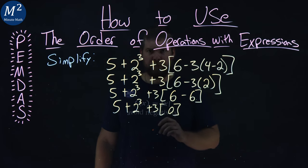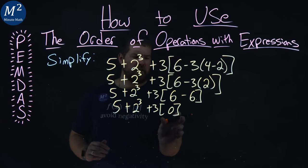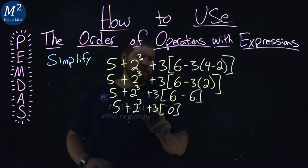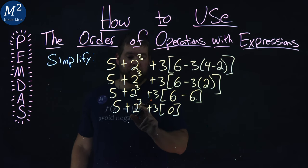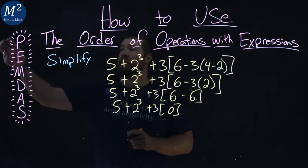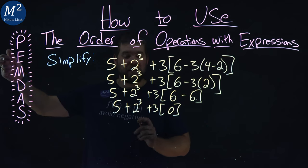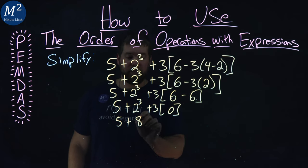Now, we apply PEMDAS again. There's nothing else within this bracket here that we can simplify. So we have multiplication here, we have some additions, but we also have an exponent here. So our order of operations says we have no parentheses left that's inside that we do. Exponents is next. So 5 plus 2 to the 3rd, which is 8 here, plus 3 times 0.